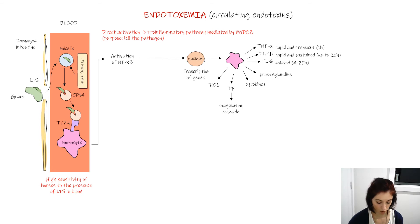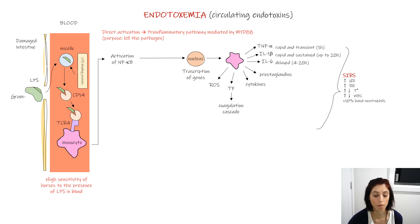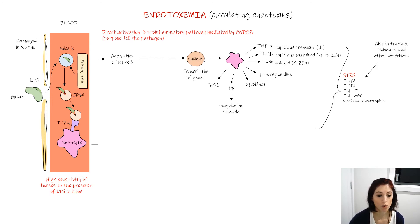Furthermore, oxygen free radicals are also released with oxidative damage. All these processes together are responsible for the clinical signs of the systemic inflammatory response syndrome. But it's important to remember that these signs can also be caused by other conditions such as trauma and ischemia.